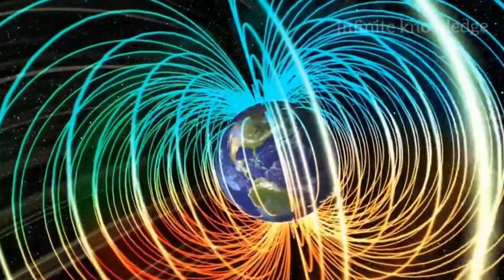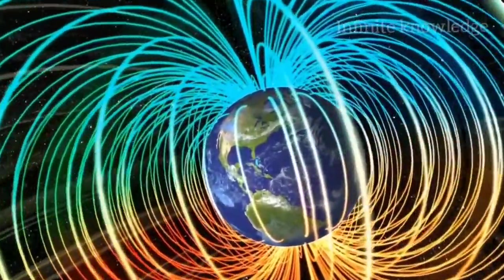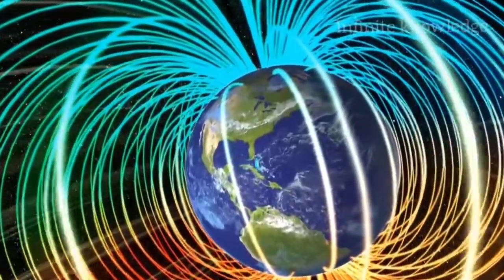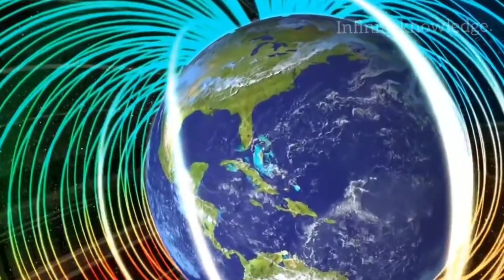Creating this global magnetic shield required special conditions. Earth had to be large enough to have a molten core and had to rotate fast enough to produce an electrical current that generates the planet's magnetosphere.